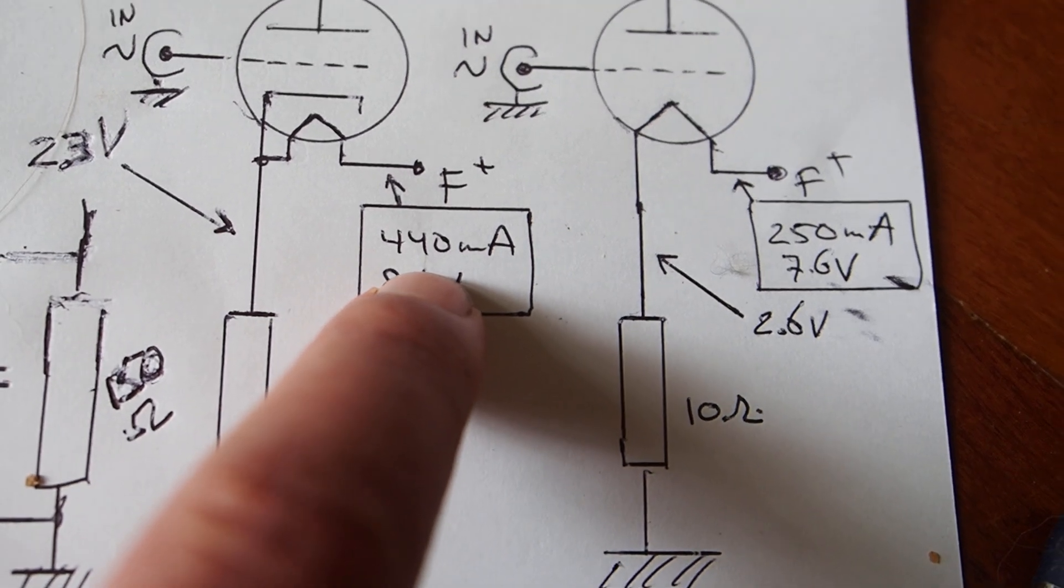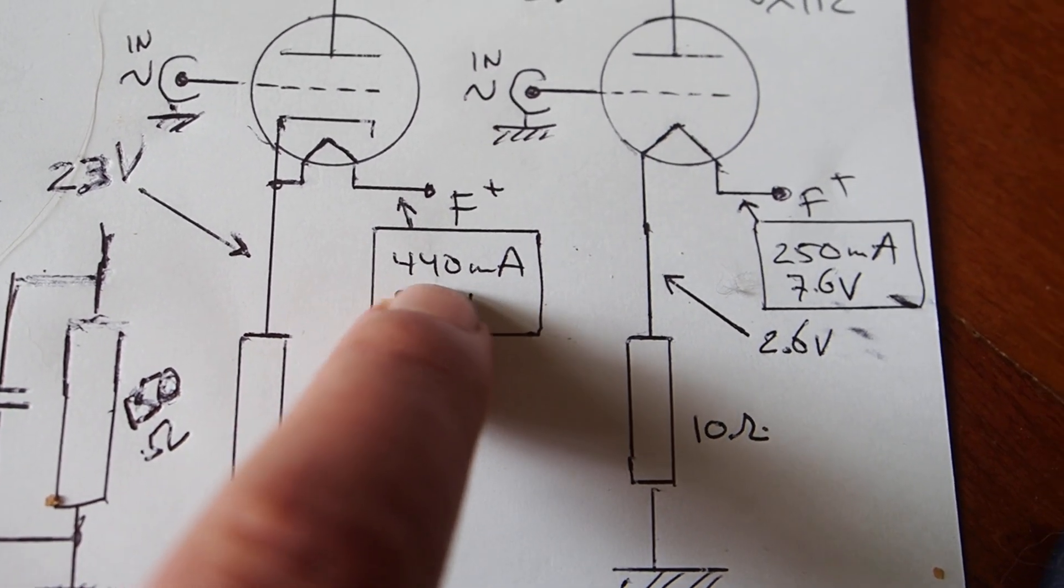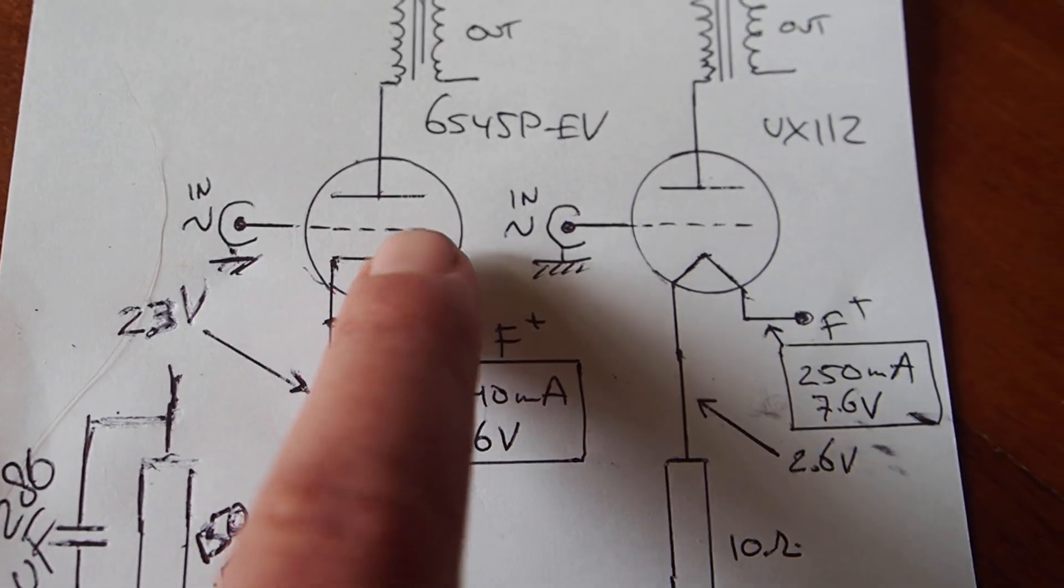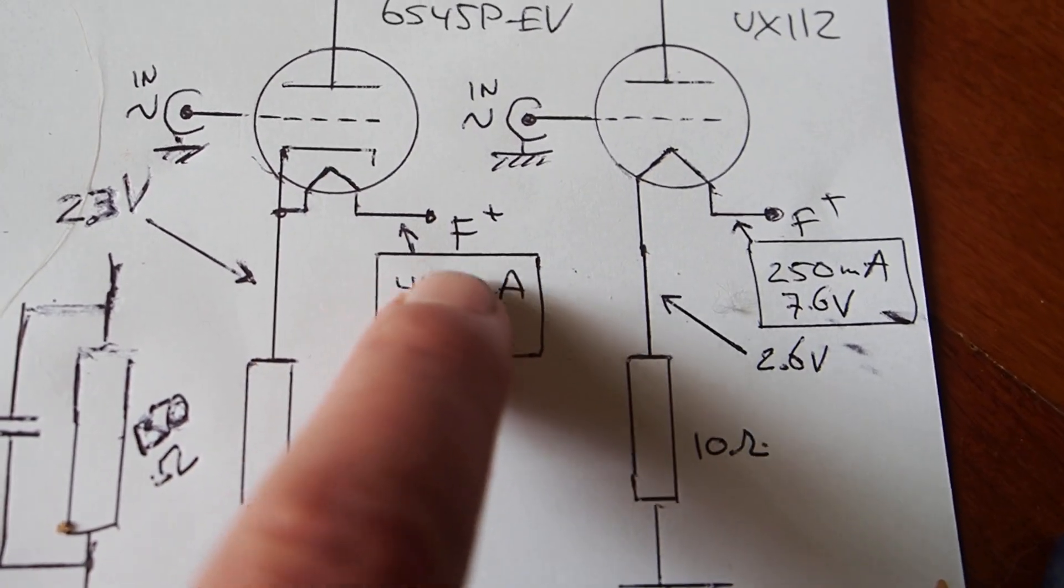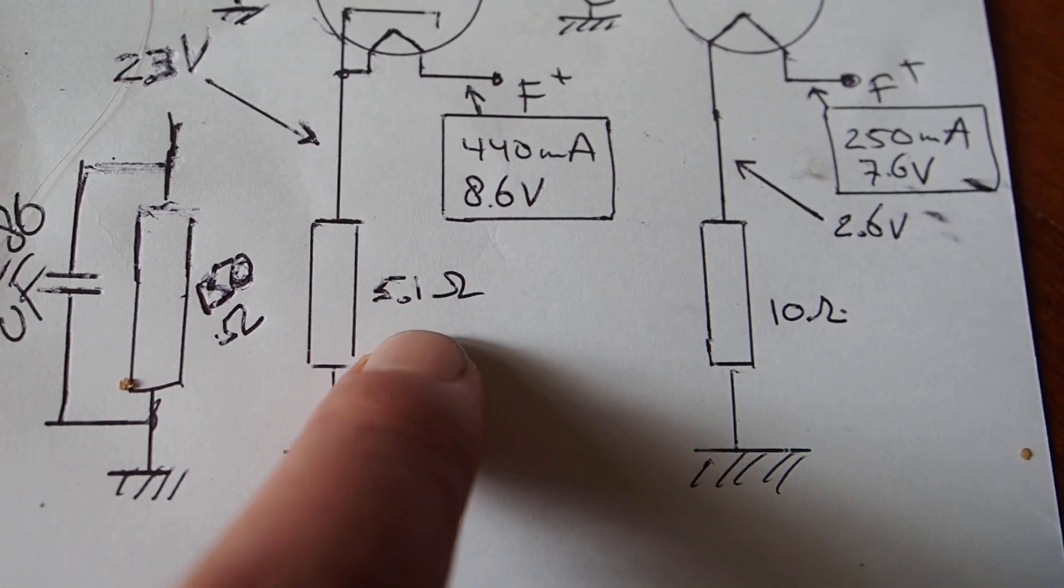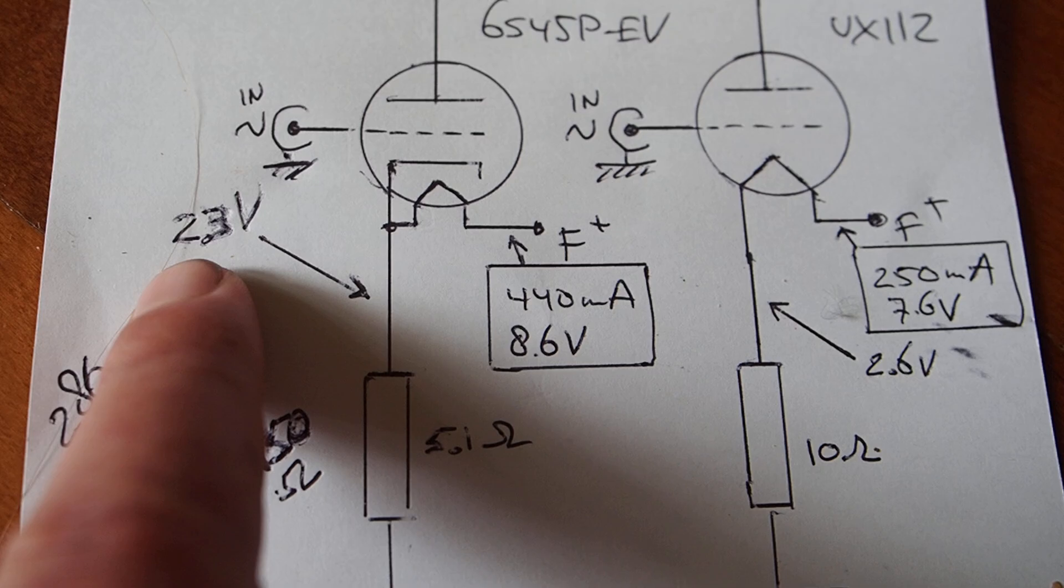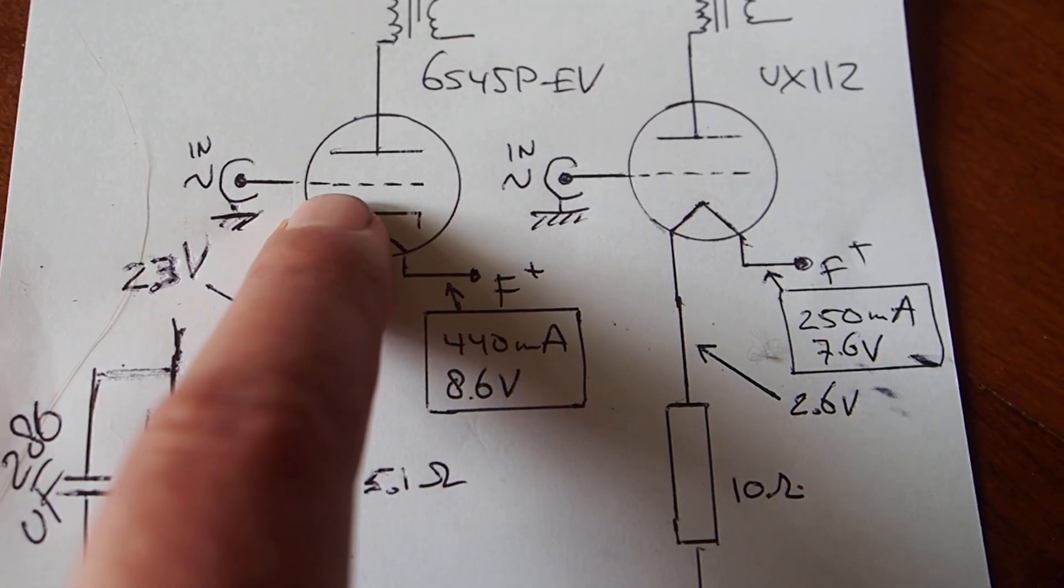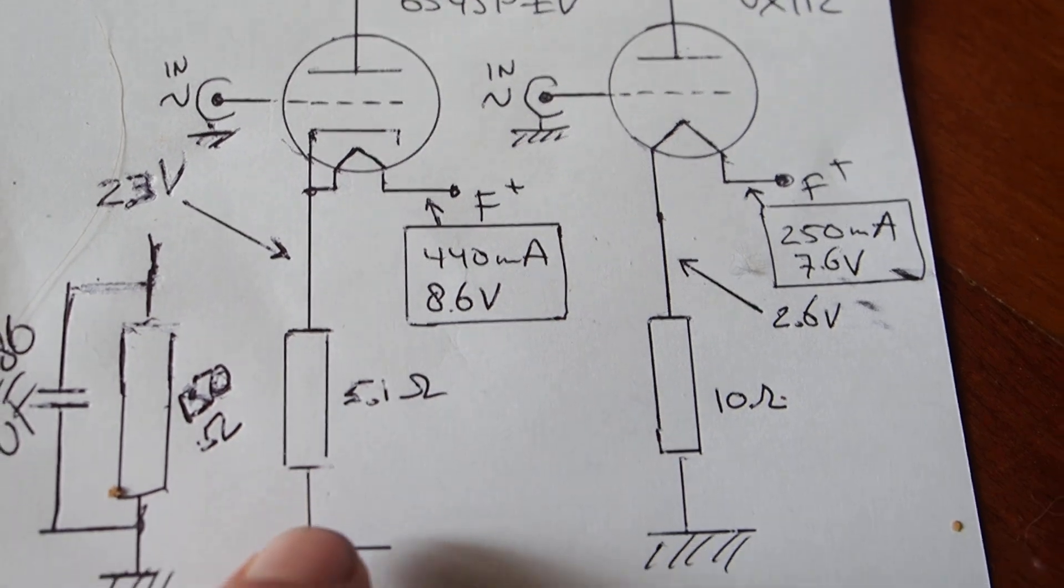We're adding to the 50 milliamps that we already had, we add 440 milliamps of filament current to this resistor, which we now can then reduce to 5.1, 5.2 ohms and we get the same bias of 2.3 volts.